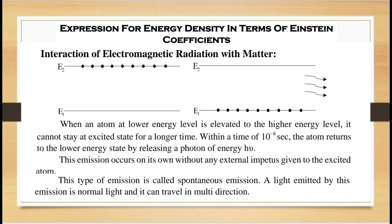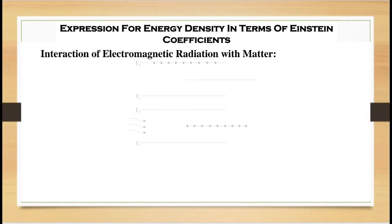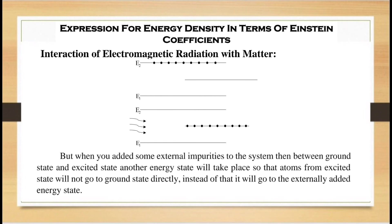When some external impurities are added to the system, another energy state appears between the ground state and the excited state, so that atoms from the excited state do not go to the ground state directly. Instead, they go to this externally added energy state, which is called the metastable state.